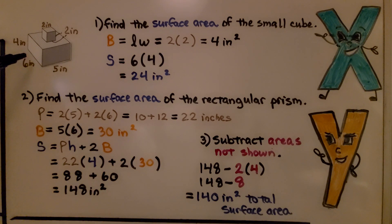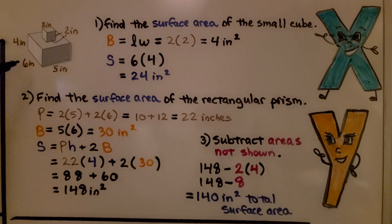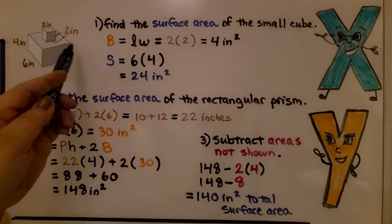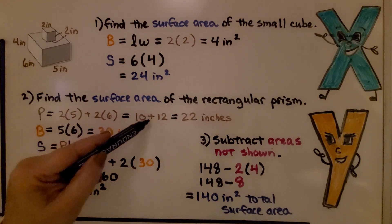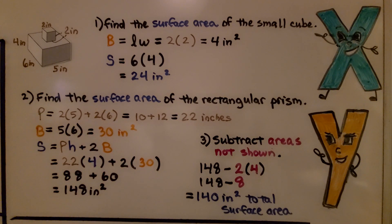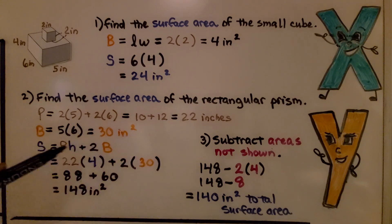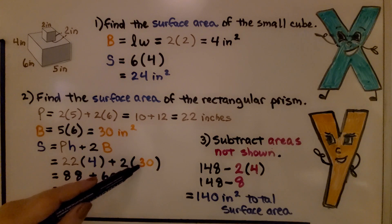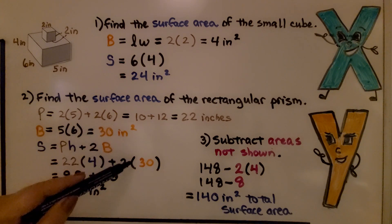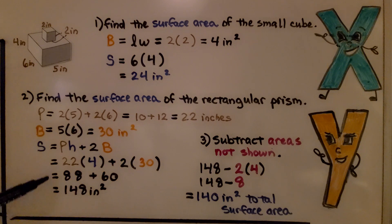Now the surface area of the rectangular prism: the perimeter of the base is 2 × 5 + 2 × 6 = 10 + 12 = 22 inches. The base area is 5 × 6 = 30 in². Using s = ph + 2b: 22 × 4 + 2 × 30 = 88 + 60 = 148 in².